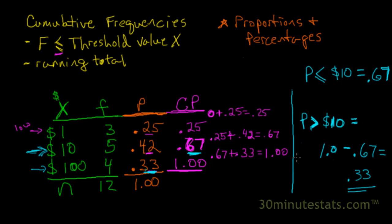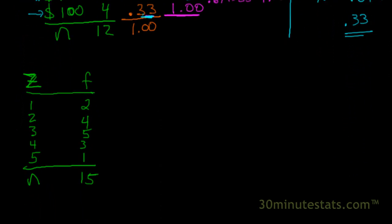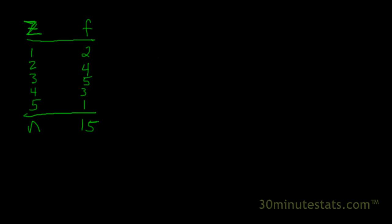This is a basic example of how to calculate cumulative proportions and then do some work with them to answer basic questions about the data. We'll now do another example using the same data set we had used before. We've got our frequency distribution for variable z, where z ranges in value from 1, 2, 3, 4, and 5. There were 15 observations in our data set, and we've got the frequencies here.